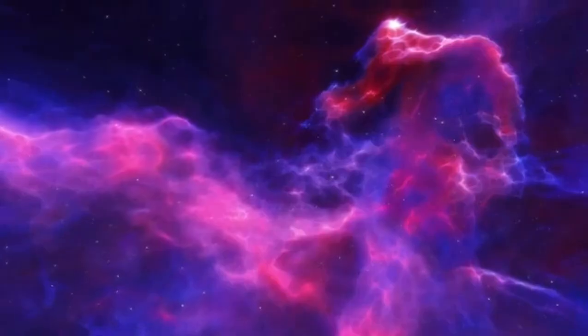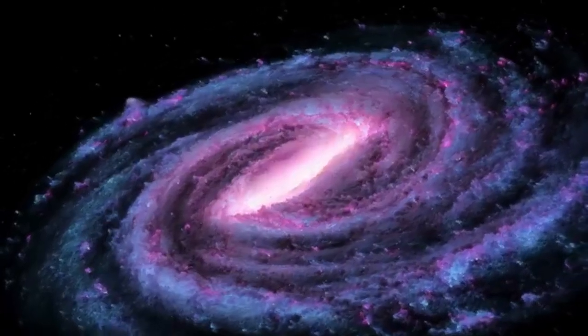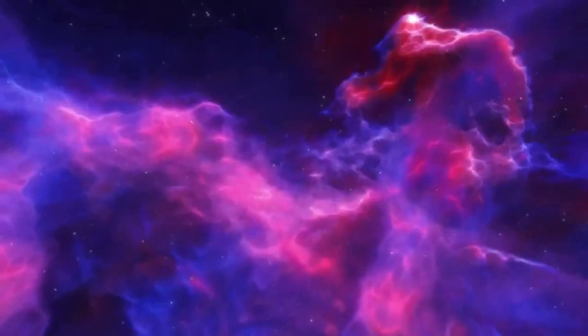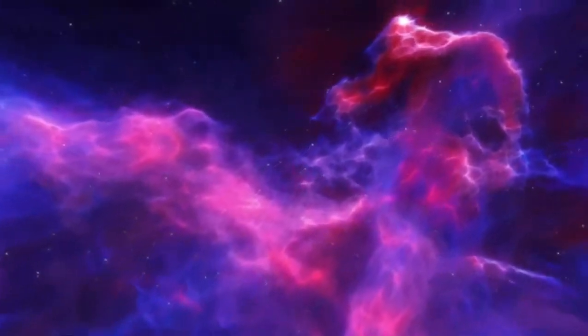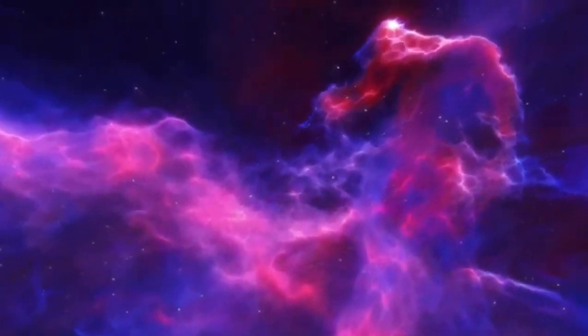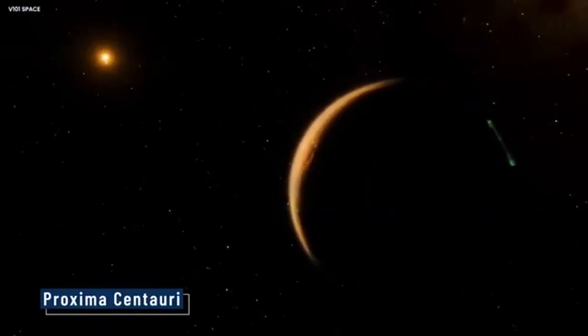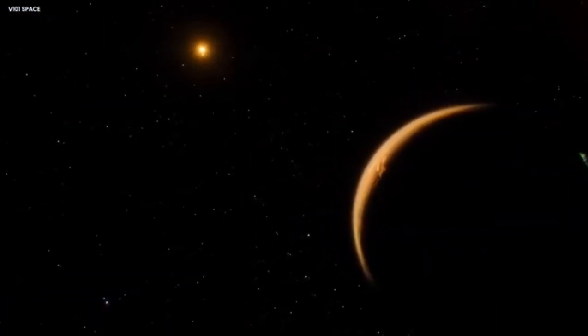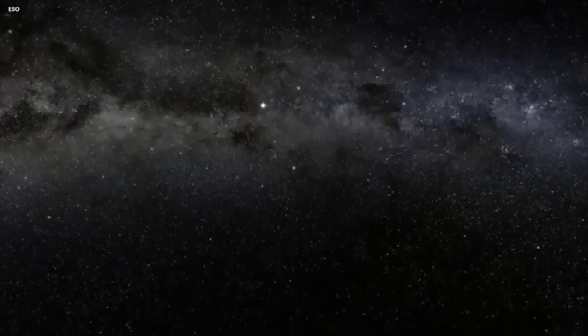First you might find yourself asking what even is Proxima b? Proxima Centauri b, or just Proxima b, is sometimes referred to as Alpha Centauri cb. It is a super-Earth exoplanet, and it orbits an M-type star. Super-Earth exoplanet, M-type star, confused yet? Do not worry, since this video will quell all of your burning questions.